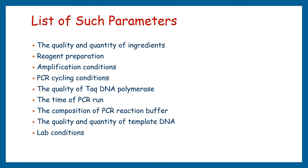Here are the key parameters: do not compromise the quality and quantity of ingredients, and be careful during reagent preparation. Use optimized amplification and PCR cycling conditions. The quality of Taq DNA polymerase should be good, and the PCR run time should be optimized. Always use good-quality PCR reaction buffer, and do not compromise the quality and quantity of template DNA. Lab hygiene conditions should also be highly maintained.